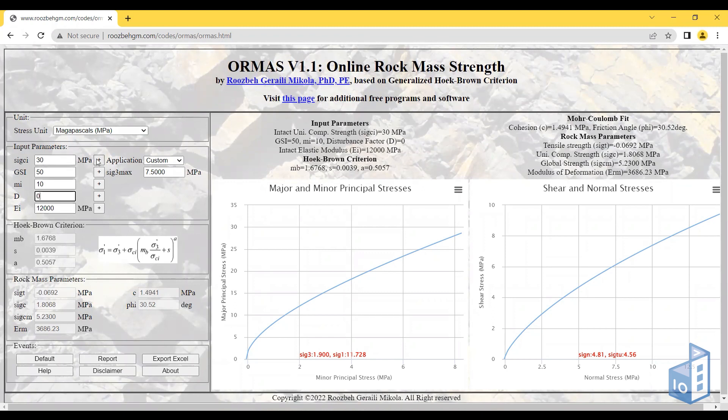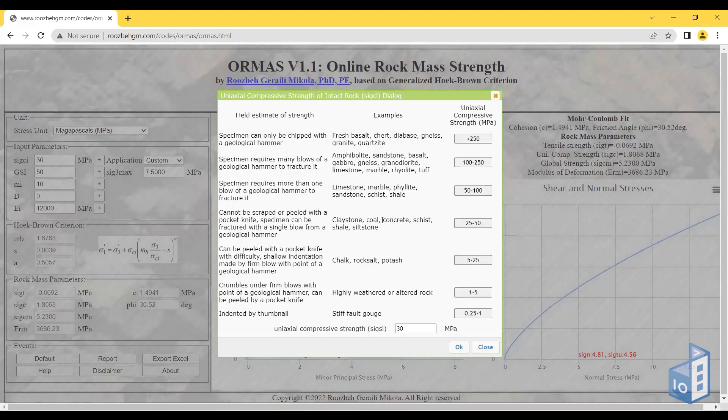This provides guidance from Professor Hoek and Brown to help you select your values. Similarly for the GSI, there's a famous figure that shows the surface conditions and the structure.